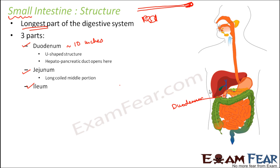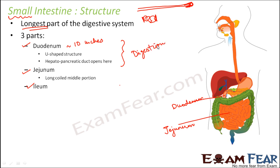Jejunum is the long coiled middle portion of the intestine and it is the primary site of absorption. Since duodenum is the place where all the enzymes and food meet, the digestive activity is done in the duodenum section, whereas in the jejunum absorption takes place. The jejunum is quite long at about 3 feet in length, compared to only 10 inches for the duodenum.